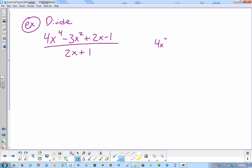4x to the 4th, and how many x cubes do we have? Zero. Zero. So we need 0x cubed minus 3x squared plus 2x minus 1. And we're dividing it by 2x plus 1.